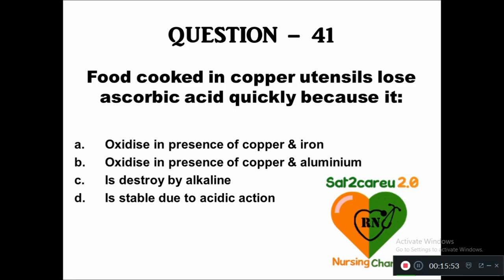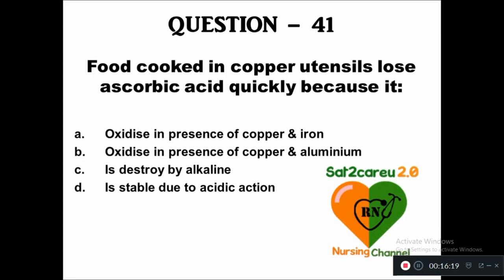Question 41: Food cookery in copper utensils loses ascorbic acid quickly because it — option A: oxidizes in presence of copper and iron, B: oxidizes in presence of copper and aluminium, C: is destroyed by alkaline, D: is stable due to acidic action. The right answer is it oxidizes in the presence of copper and iron.